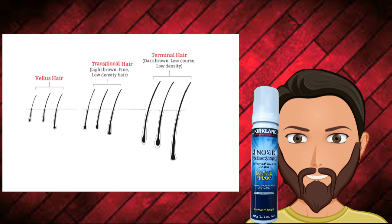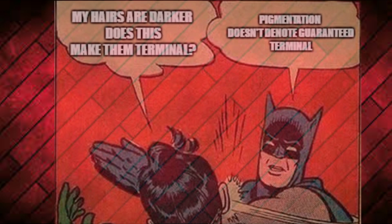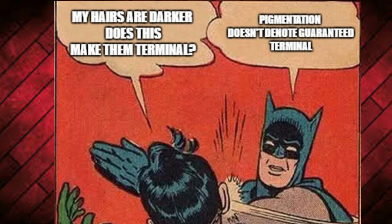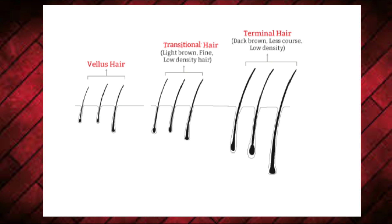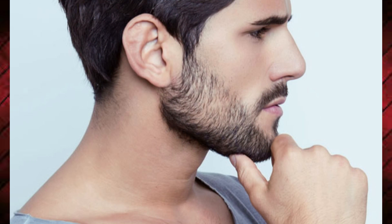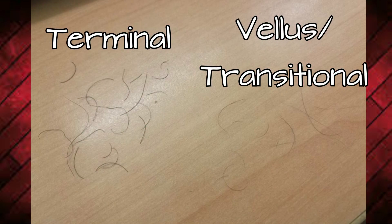Transitional hairs may obtain some pigmentation and be slightly thicker than vellus but much less so than a terminal hair, which often raises the question: my hairs are dark, does that mean they're terminal? Not necessarily. Pigmentation does not guarantee terminal status — it is but one factor. Transitional vellus may be pigmented, some even appearing as dark as terminal hairs, but they usually tend to be lighter. You can use your pre-existing facial hair as a guide, comparing existing terminal hairs to new growth. If they are soft, thin, and wispy, you're probably still dealing with a vellus or transitional hair.